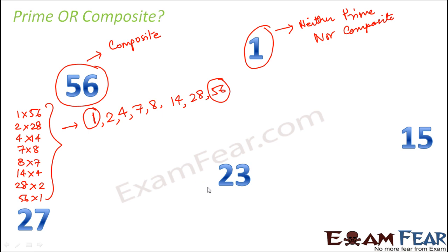Let's consider 23. So what are the different ways you can write 23? 1 into 23 and 23 into 1. It is not divisible by any other number like 2, 3, 4, 5, 6, 7 and so on. So therefore 23 is a prime number.